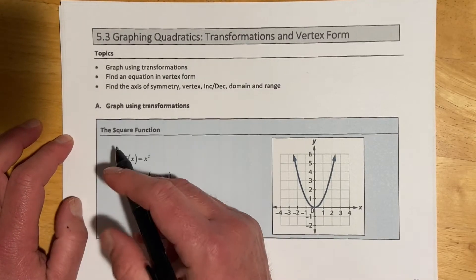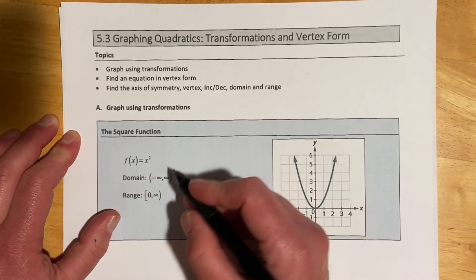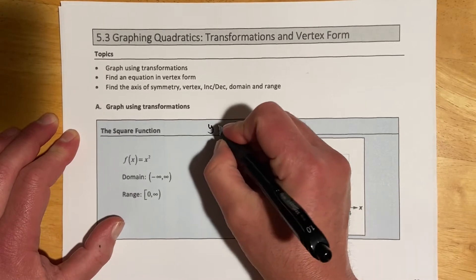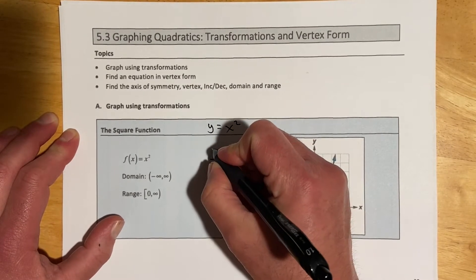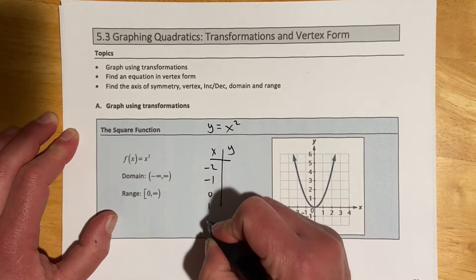So let's look at the square function. Square function, we've been doing lots with them. It's x squared, right? And if you think about what that table, just y equals x squared would look like: negative 2, negative 1, 0, 1, 2.